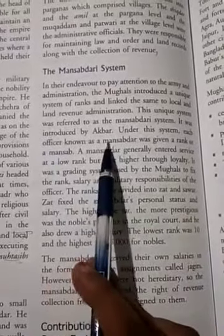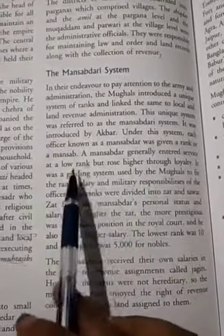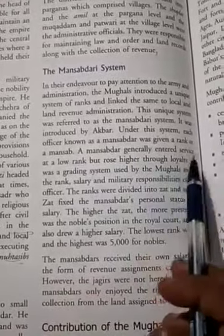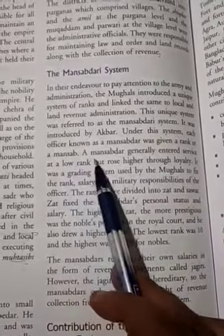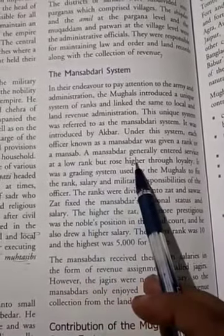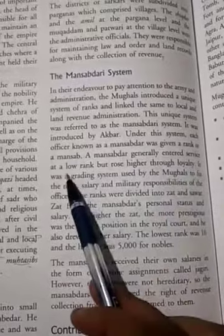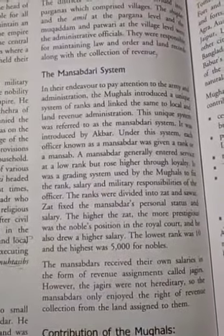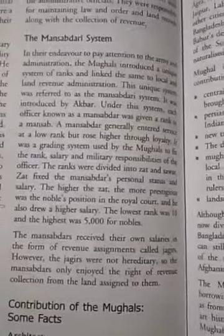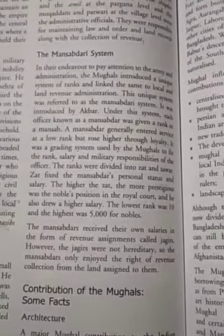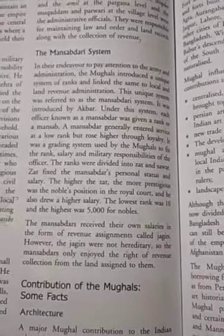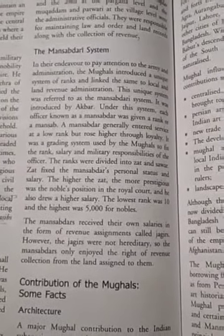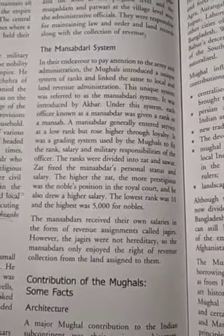It was introduced by Akbar. Under this system, each officer known as a mansabdar was given a rank or a mansab. A mansabdar generally entered service at a low rank but rose higher through loyalty. It was a grading system used by the Mughals to fix the rank, salary, and military responsibility of the official.